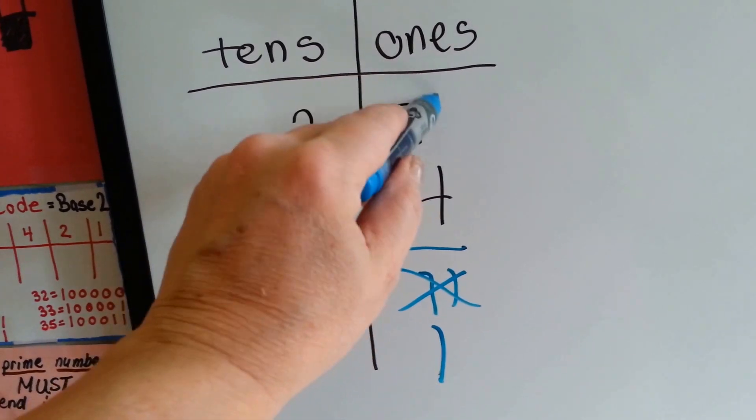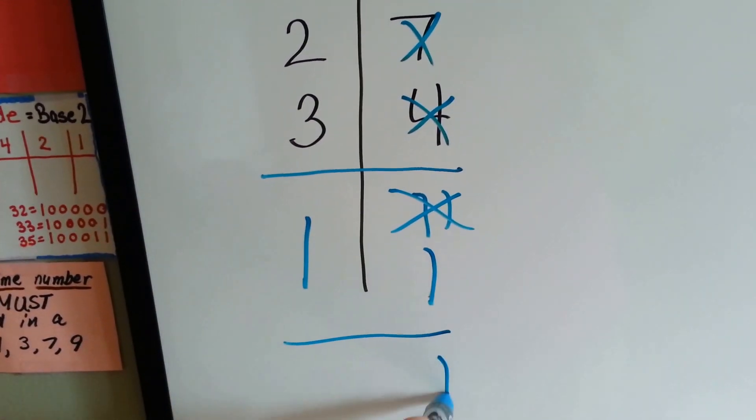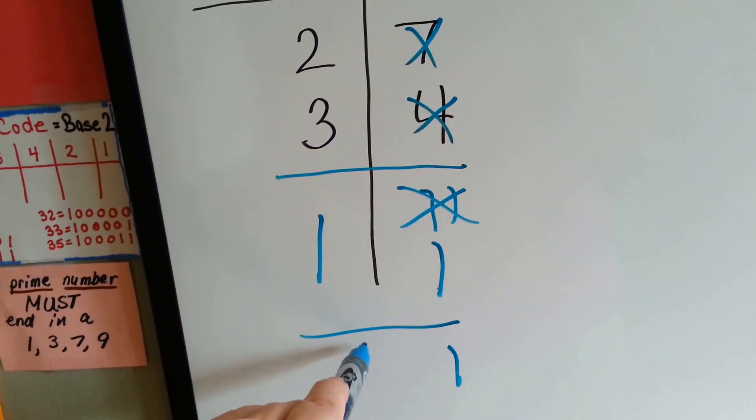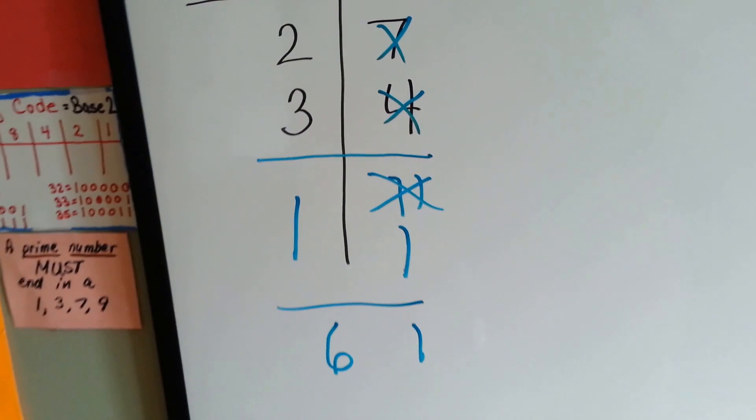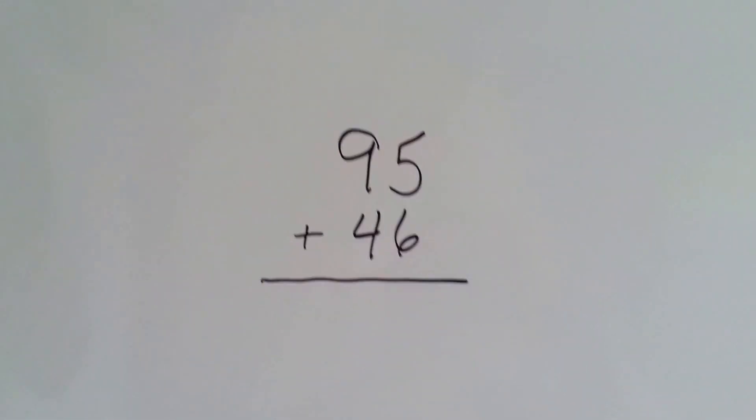That's going to make 1 here and 2, 3, 4, 5, 6. 61. See? So that's regrouping it and adding it to the tens place. What about 95 plus 46?